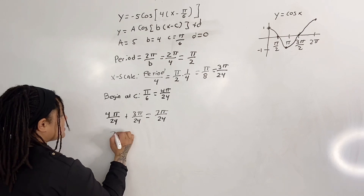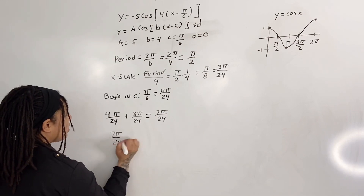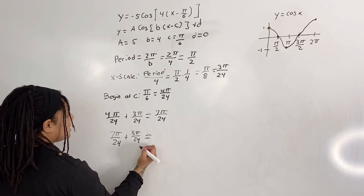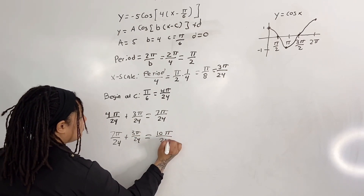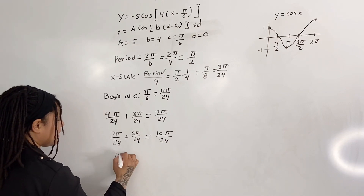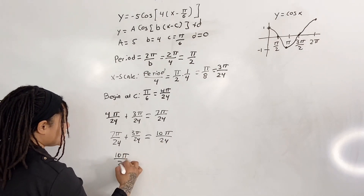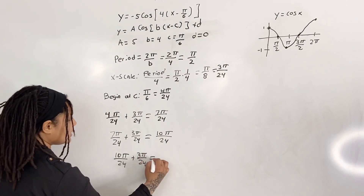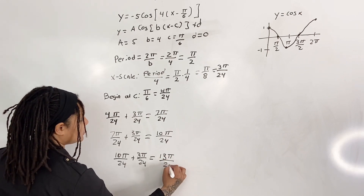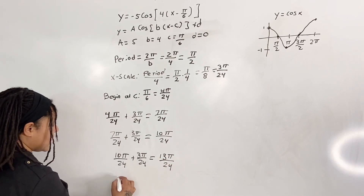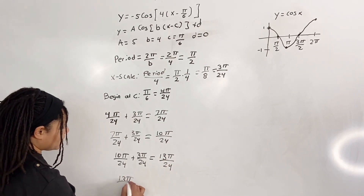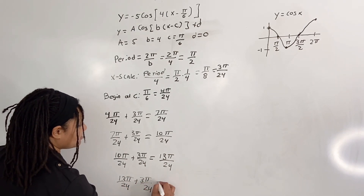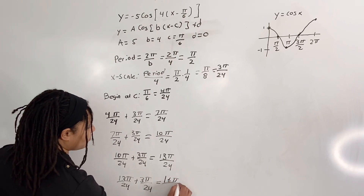Continuing to add increments: 7 pi over 24 plus 3 pi over 24 gives 10 pi over 24. Then 10 pi over 24 plus 3 pi over 24 gives 13 pi over 24. Finally, 13 pi over 24 plus 3 pi over 24 gives 16 pi over 24.